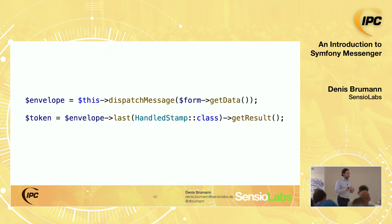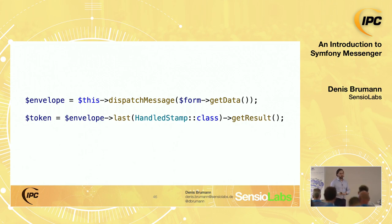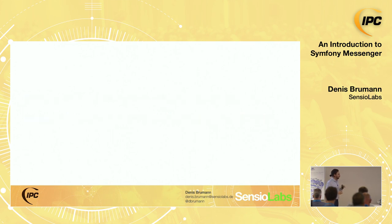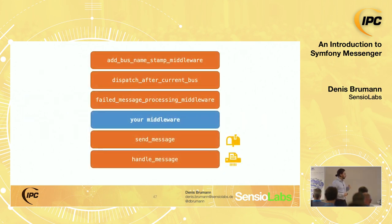Stamps work both ways — middleware can send metadata back to you, and you can send context to middleware. For example, if using the validation middleware, you can create an envelope with a ValidationStamp specifying validation groups like 'registration' instead of validating everything. Rather than a huge context array, you have contextually applied stamps, which fits nicely with the messaging metaphor of stamps and envelopes.